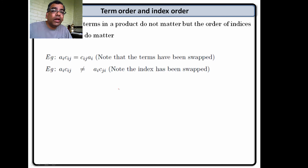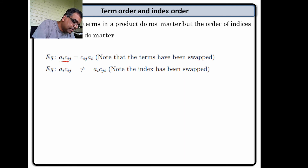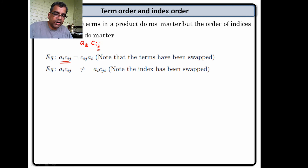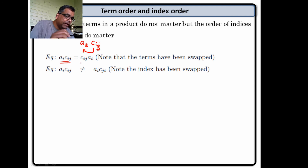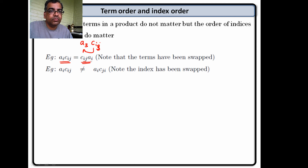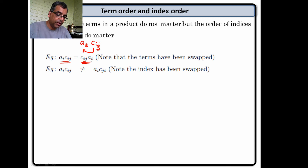Now comes an important point: you do not have to worry about the order of the terms. The terms are scalars; the index tells you where they are in the matrix. So do not mess with the indices. If you look at an equation, it is telling you to take a specific element from vector A and multiply it with a specific column of matrix C. The terms can be swapped in order, but indices cannot be swapped — changing the index means you are looking at a different term in the matrix.